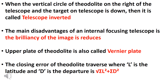The closing error of theodolite traversing, where L is latitude and D is departure, is given by the formula: root of (sigma L squared plus sigma D squared).